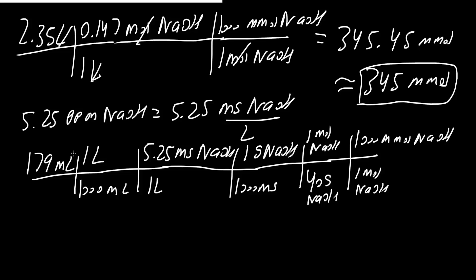So let's check our units. Milliliters cancel. Liters cancel. Milligrams cancel. Grams cancel. Moles cancel. And we have millimoles of NaOH. And so if we use a calculator, we would get 0.0235 millimoles of NaOH.